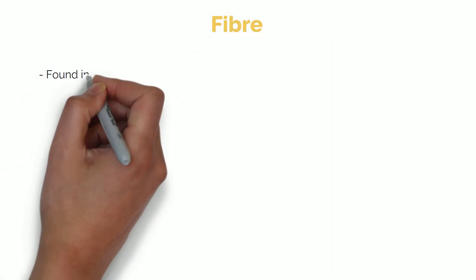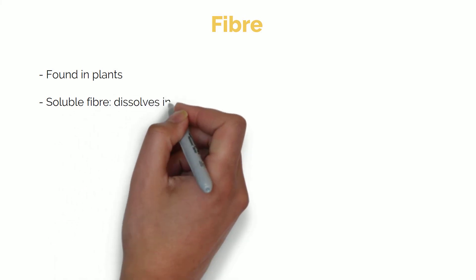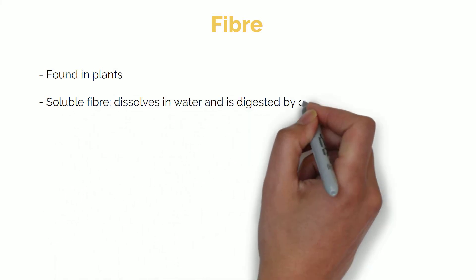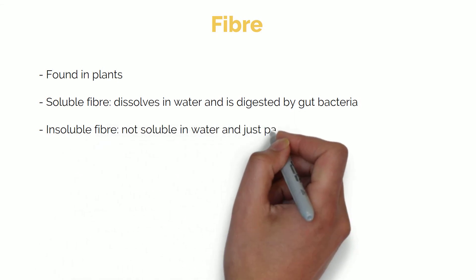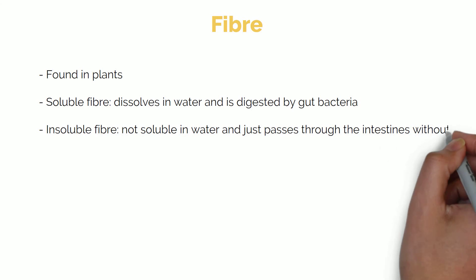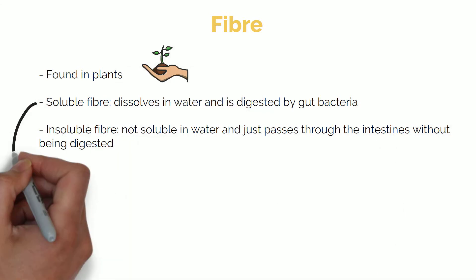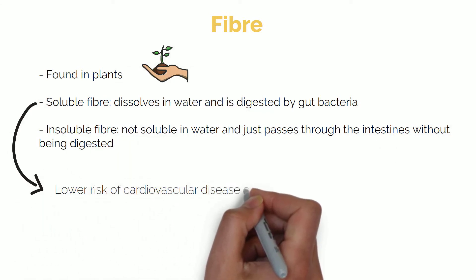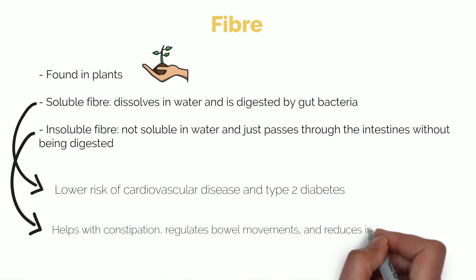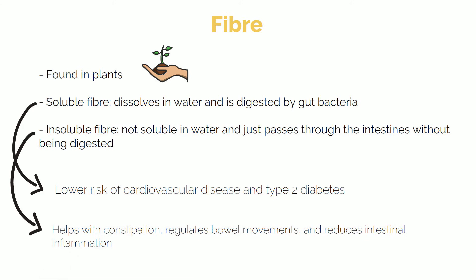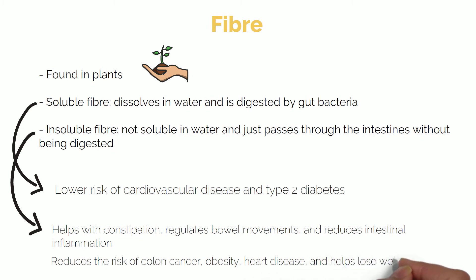Fibre is a type of carbohydrate which is found in plants. It can be divided into soluble fibre, which dissolves in water and is digested by gut bacteria, and insoluble fibre, which is not soluble in water and passes through the intestines without being digested. The consumption of soluble fibre has been linked with lower risk of cardiovascular disease and type 2 diabetes, and insoluble fibre helps with constipation, regulates bowel movements, reduces intestinal inflammation, reduces the risk of colon cancer and obesity, and even helps lose weight.